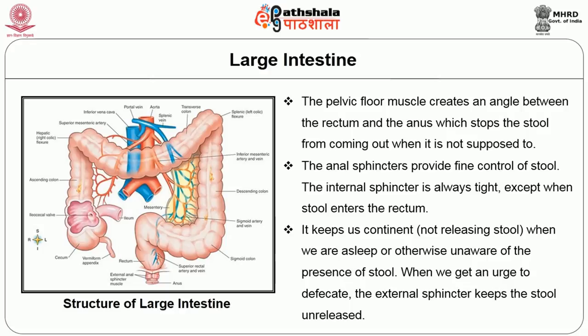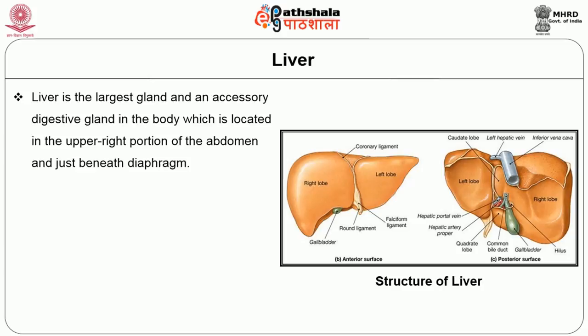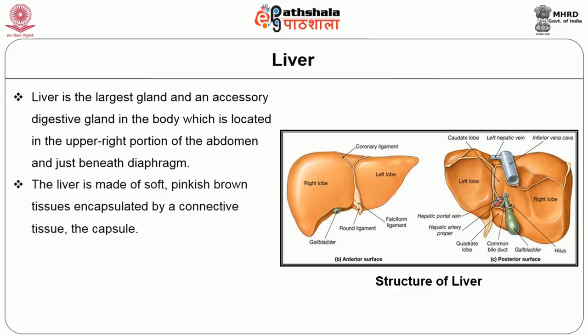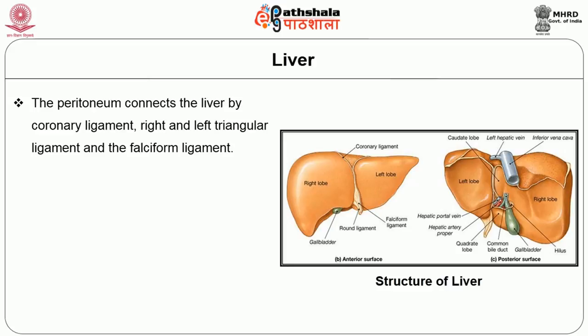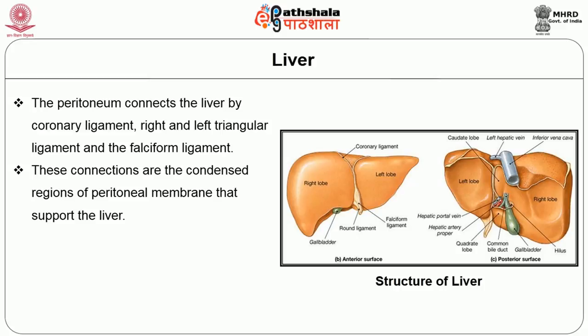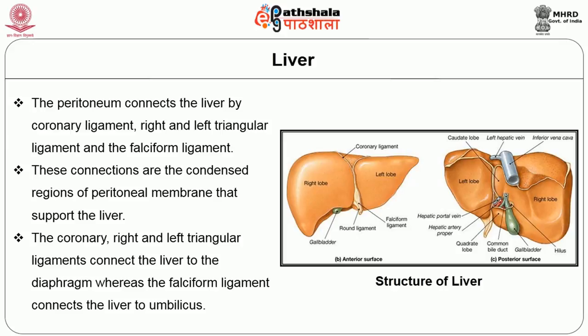The liver, which is the largest gland, master gland, and an accessory digestive gland in the body, is located in the upper right portion of the abdomen just beneath the diaphragm. The liver is made of soft pinkish-brown tissue encapsulated by connective tissue called the capsule. The capsule is covered and reinforced by the peritoneum of the abdominal cavity, which protects the liver and holds it in place. The peritoneum connects the liver by the coronary ligament, right and left triangular ligaments, and the falciform ligament, which are condensed regions of peritoneal membrane that support the liver.